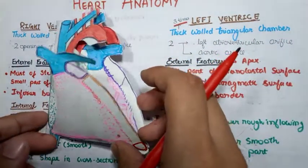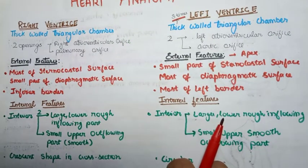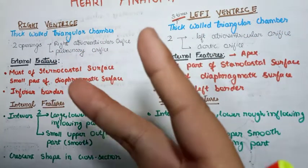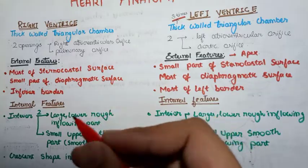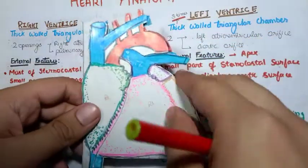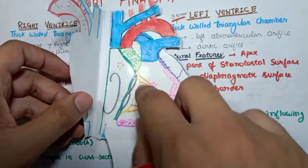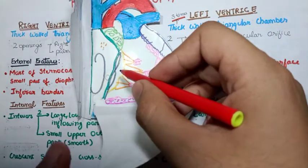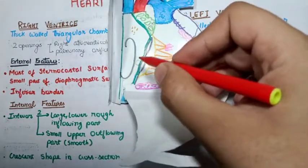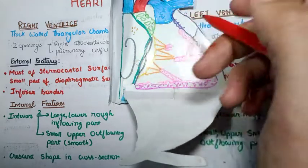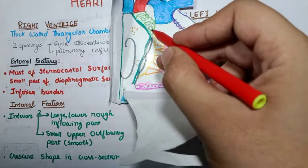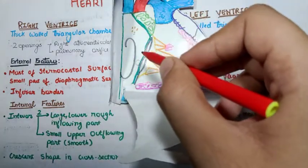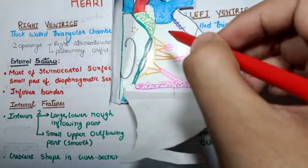The internal features of both ventricles are more or less similar. The interior of each ventricle is divided into two parts: a large lower rough inflowing part, through which blood enters the chamber via the atrioventricular orifice, and a small upper smooth outflowing part — which is the aortic or pulmonary region. So the inflowing part is rough and larger, while the outflowing part is small and smooth.